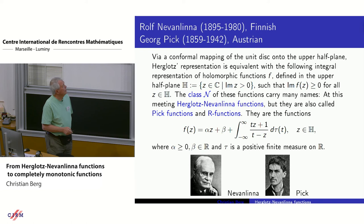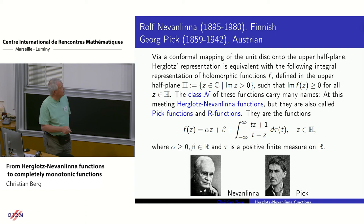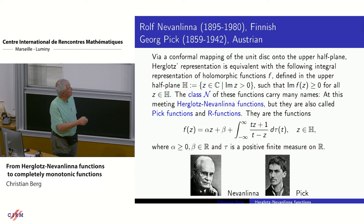Something very similar is behind the next thing, because we replace the unit disk by the upper half plane, just by a conformal mapping. The formula of Herglotz is then transformed into the formula for Pick functions, or Herglotz-Nevanlinna functions, or R-functions — they have many names because they have been used in many different contexts. These are functions holomorphic in the upper half plane having non-negative imaginary part, and we have also seen this formula before.